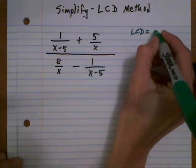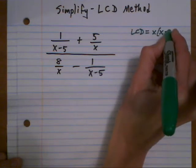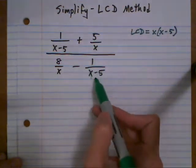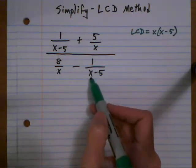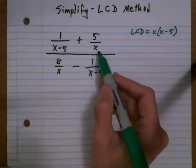And remember you take each factor that you see in a denominator the most number of times you see it appearing in any one denominator. So even though we see x minus 5 showing up twice, it's one factor and it shows up the most one time in any denominator so only take it once. And same with the x.